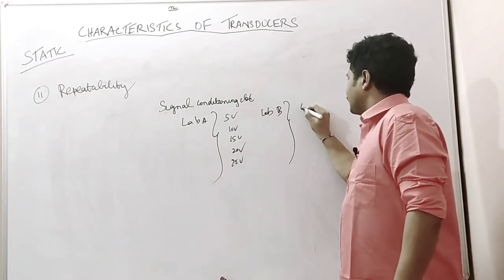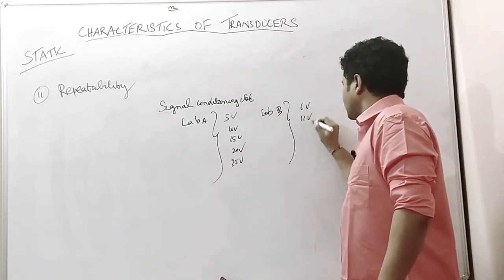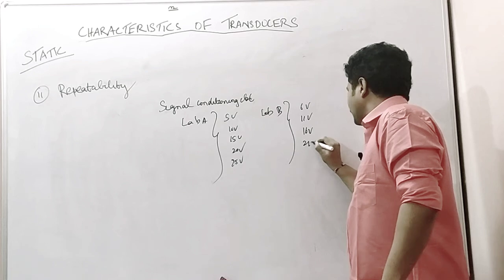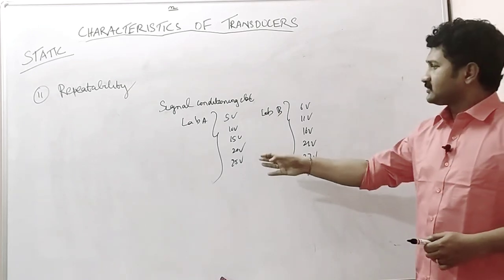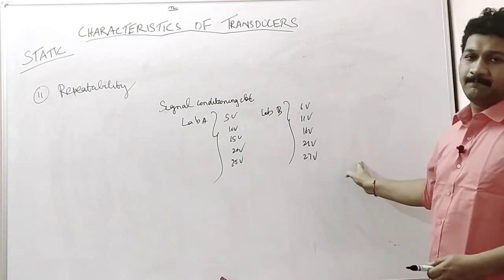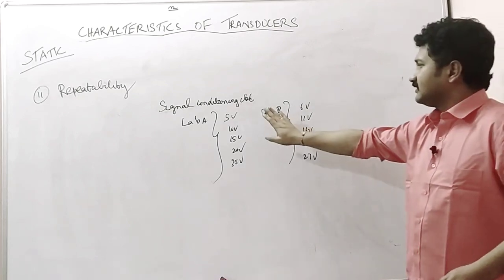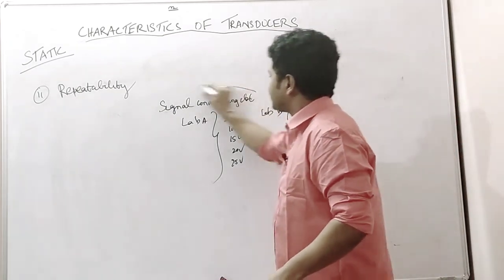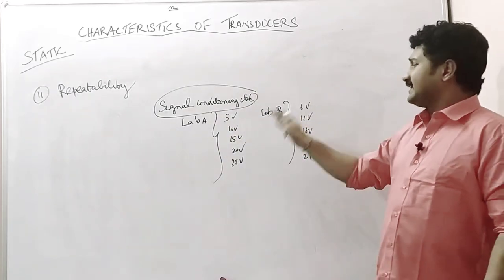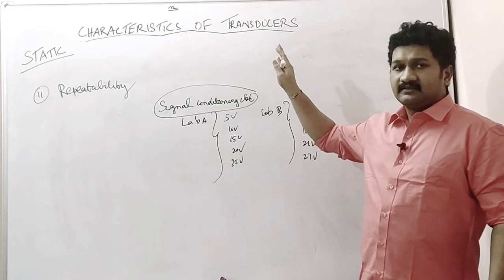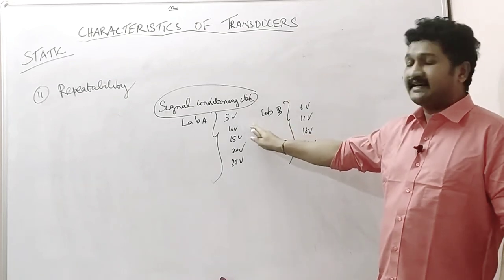You will get voltages of 6V, 11V, 16V, 21V, and 27V. So this shows that there is no repeatability of this particular transducer or signal conditioning circuit. We can say that this transducer is not maintaining repeatability.